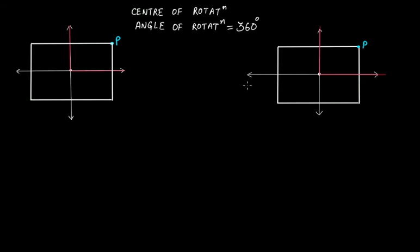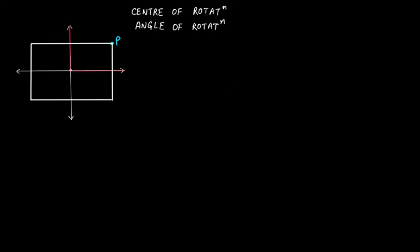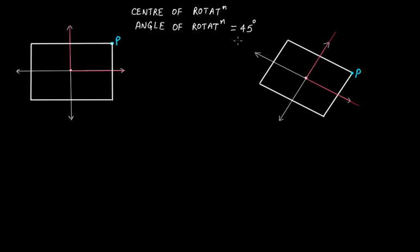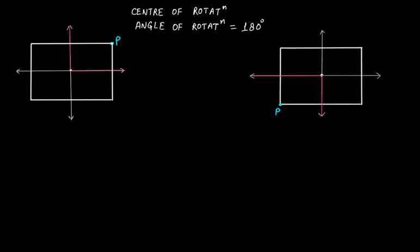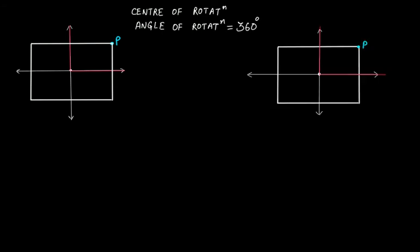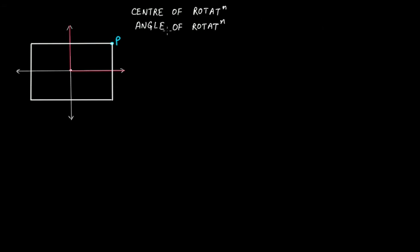So at how many positions do we have rotational symmetry? First at 90 degrees, then at 180 degrees, then at 270 degrees, then at 360 degrees. That means we have four orders of rotational symmetry for a square.